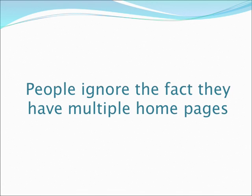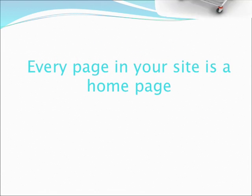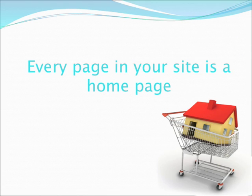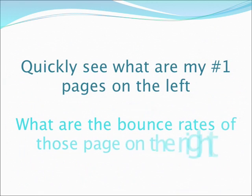People use search, people use email, people use so many different ways — Twitter and whatnot — and go deep into your website. Most times what people do is ignore the fact that they have multiple homepages. This extremely simple report shows you on the left-hand side the top 10 homepages of your website, and on the right-hand side it shows you the bounce rate of those homepages. I can very quickly see that the bounce rate of my number one homepage is 40%, and it stinks.